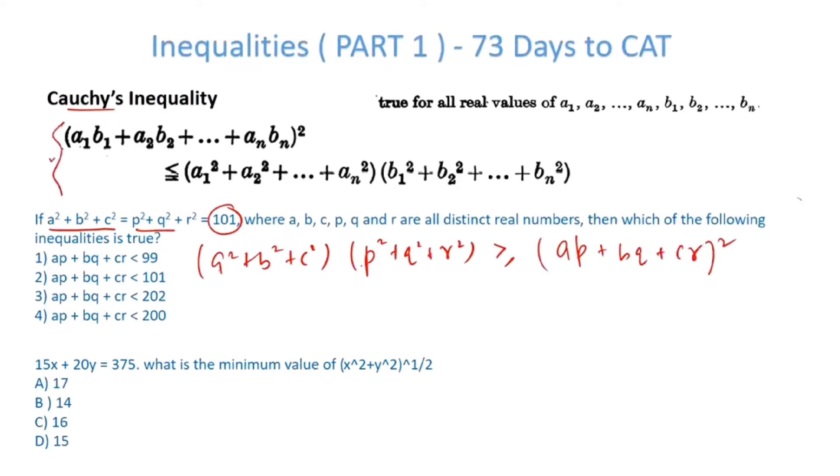That is what Cauchy's inequality is all about. We know this value is 101. This must be less than equal to 101 because if you take a square root, very simply answer option 2 is correct. ap plus bq plus cr is less than 101.